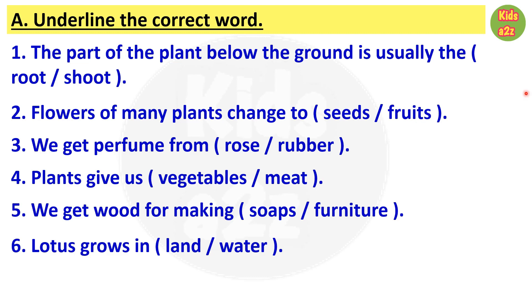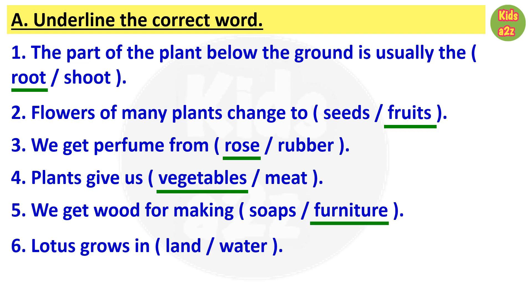The first question is: the part of the plant below the ground is usually the — correct answer is root. Question 2: flowers of many plants change to — answer is fruits. Question 3: we get perfume from — answer is rose. Question 4: plants give us — answer is vegetables. Question 5: we get wood for making — answer is furniture. Question 6: lotus grows in — correct answer is water.